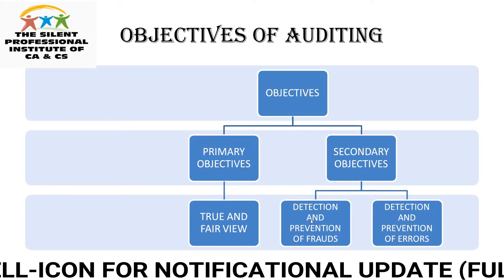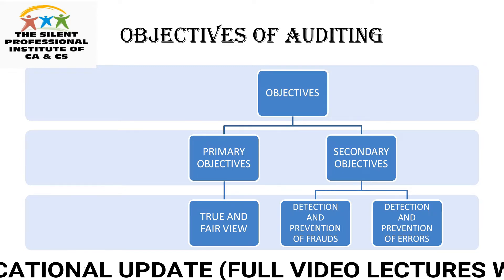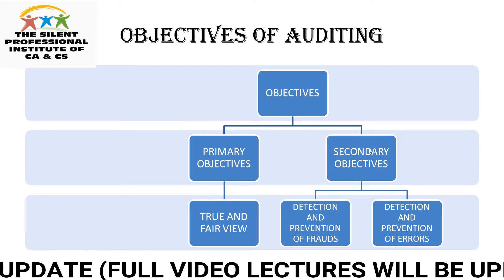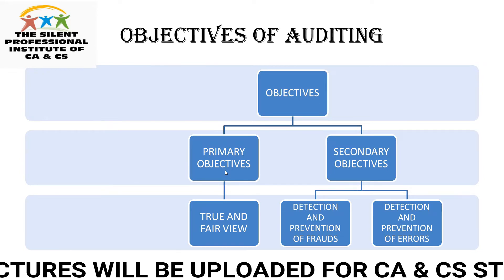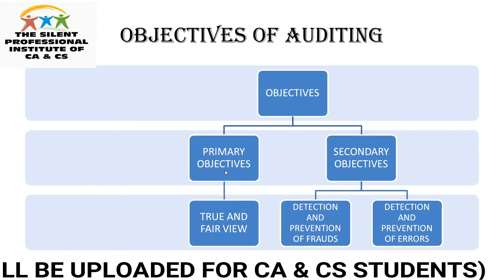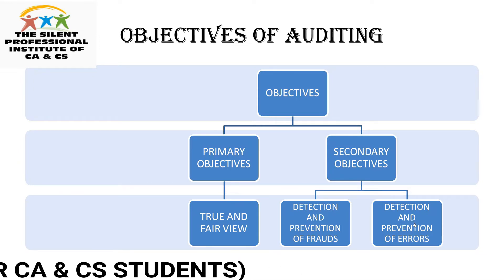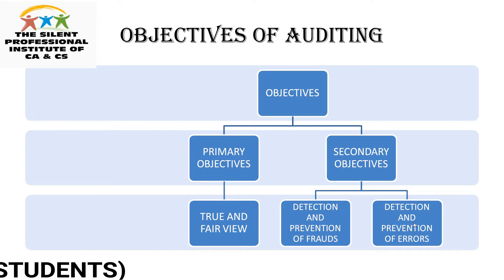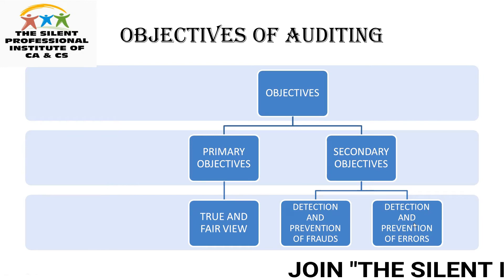Now the objectives of auditing — there are two types: primary and secondary. The primary objective, without any doubt, is to express an opinion on the truth and fairness of the financial statements. The secondary objective is detection and prevention of frauds and errors. Fraud is done intentionally — where someone wants to cheat the organization. Error, as the name suggests, is done mistakenly and is unintentional.